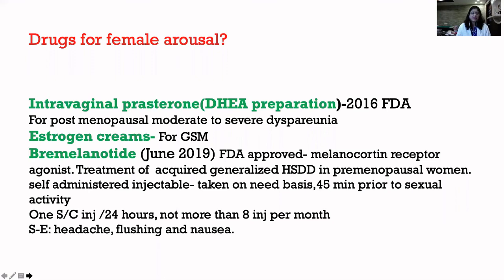Then we have bremelanotide injections, approved as late as June last year. It is a melanocortin receptor agonist that works on the brain, used for treatment of acquired generalized HSDD in premenopausal women. It is like an insulin injection — you need to inject yourself subcutaneously. Women have to do it themselves after the doctor shows them how. It has to be taken on a need basis, at least 45 minutes prior to sexual indulgence, with only one injection in 24 hours.